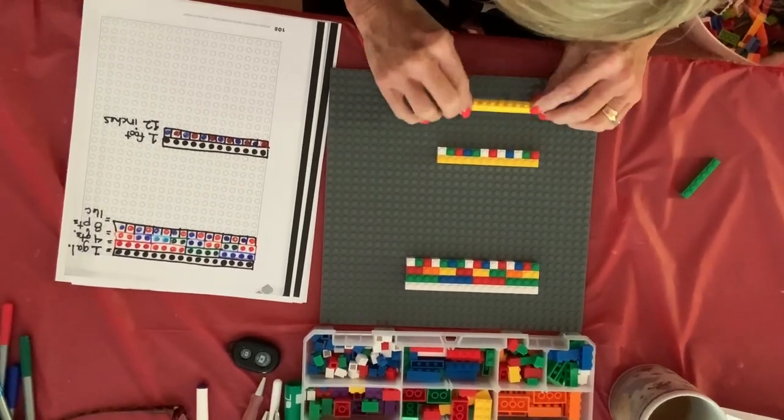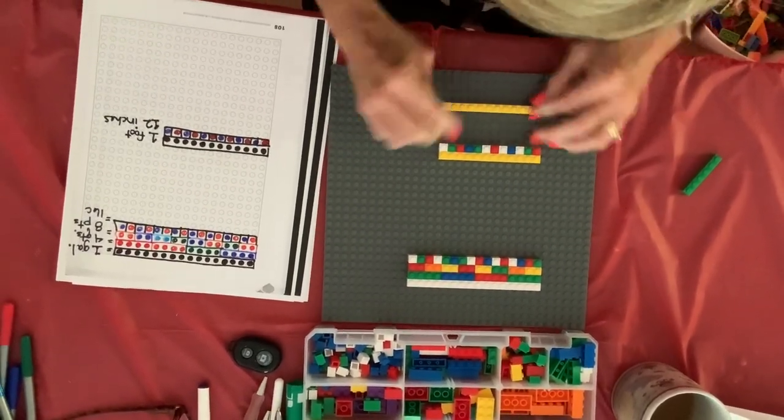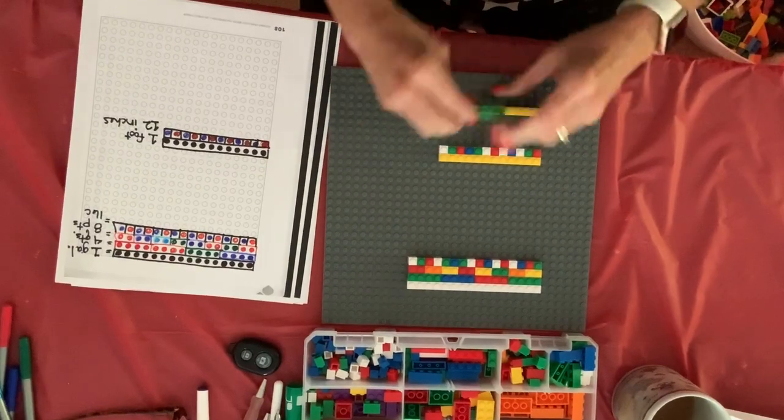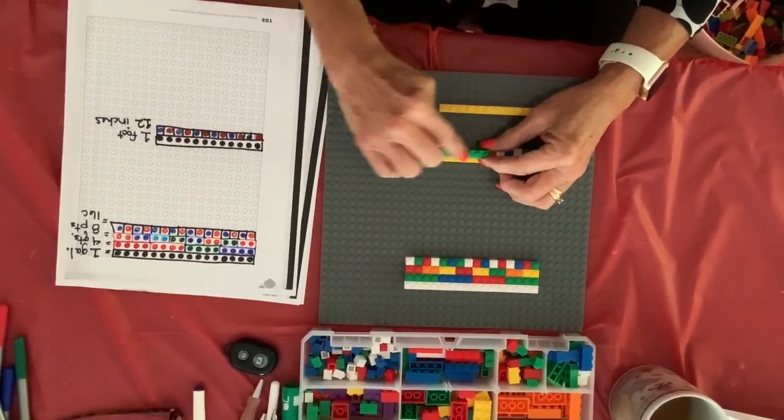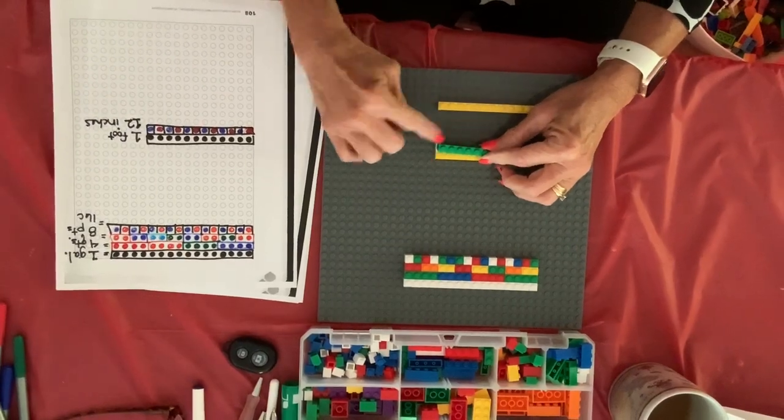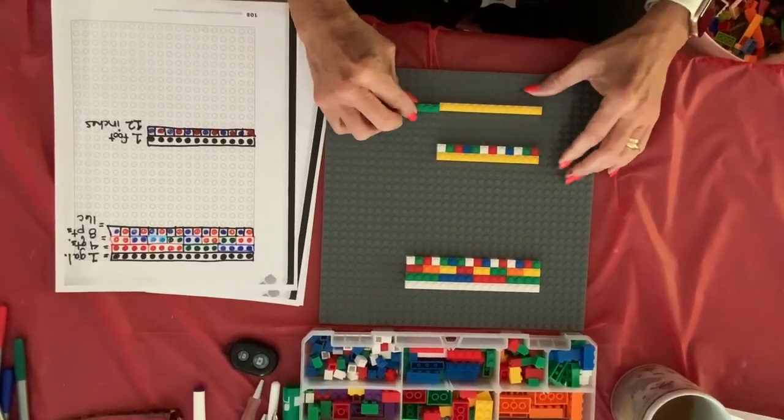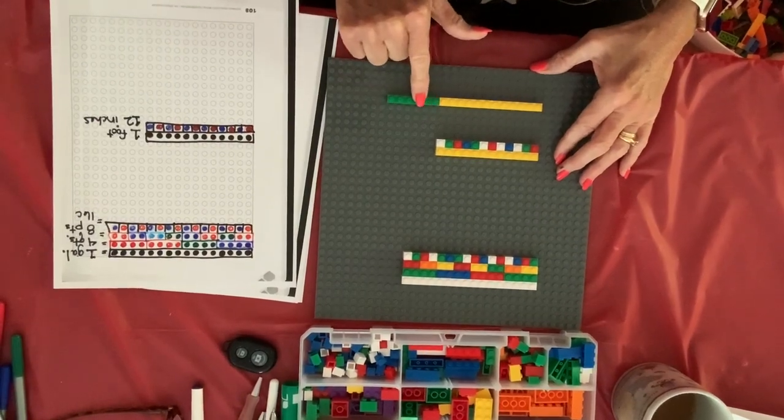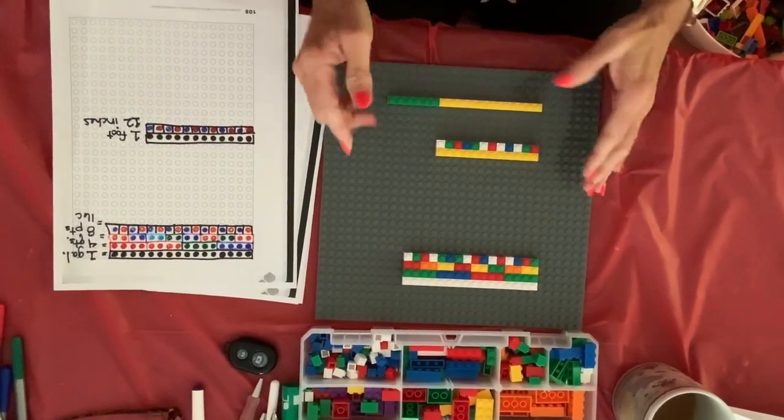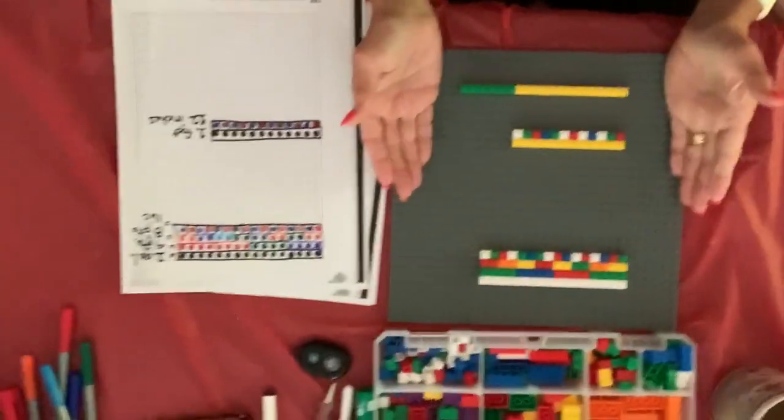If Susie wanted to cut a ribbon one and a half feet long, she could match this up. You could use counting on by matching, doing a comparison model to match the one-by-six brick, showing that there are six inches in a half a foot. Adding that to the foot and then counting: 12, 13, 14, 15, 16, 17, 18 inches in her piece of ribbon.